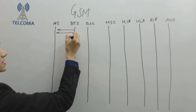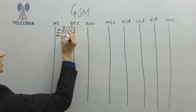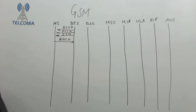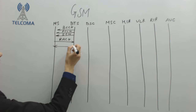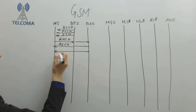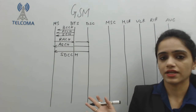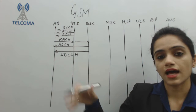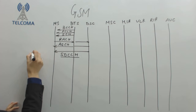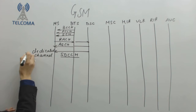We already receive three channels from the network: broadcast channels BCCH, FCCH, and SCH. Then comes the first channel for request procedures, which is RACH or random access channel. After that, we have access grant channel. Then we have the SDCCH channel — standalone dedicated control channel — which is allocated for signaling purposes. All signaling will be processed with the help of the SDCCH channel.